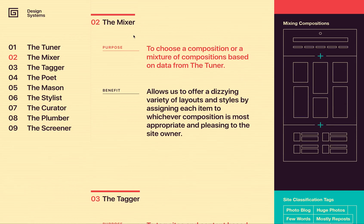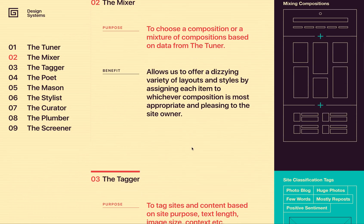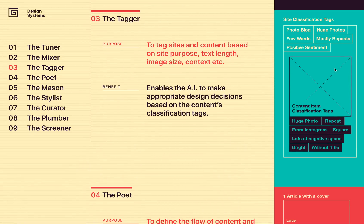Once we have a mix — because it's really a mix that will be used to create your website — we go to the tagger. The tagger is responsible for classifying your content. We do two levels of classification: one at the site level and one at the item level. An item is really a post, a piece of content that you share through the web application — if you write an article or share a tweet, that is an item. When we receive those items, we classify them to identify things like: this item has a huge photo, it's a repost from Instagram, and so on. Those classifications allow us to make decisions further down the line.